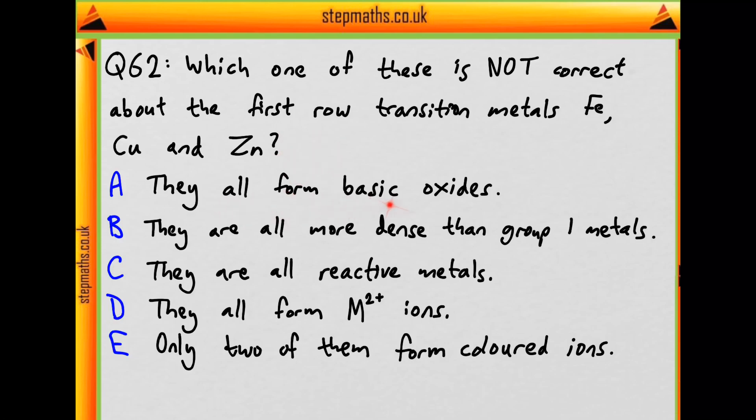Option A: they all form basic oxides. B: they are all more dense than group 1 metals. C: they are all reactive metals. D: they all form M2+ ions. And E: only two of them form coloured ions.